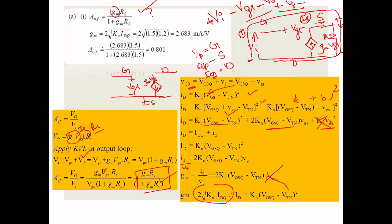Now calculating numerically: GM = 2√(KN × IDQ) = 2√(1.5 × 1.2) = 2.683 mA/V. Then the transfer function AVF = GM·RS / (1 + GM·RS), plugging in GM = 2.683 and RS = 1.5 kΩ, gives AVF = 0.801.